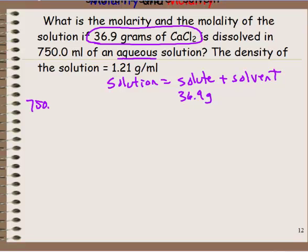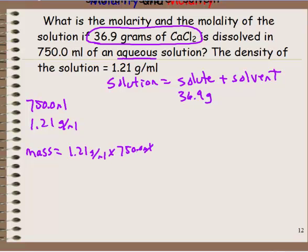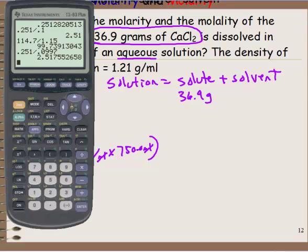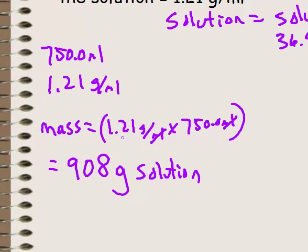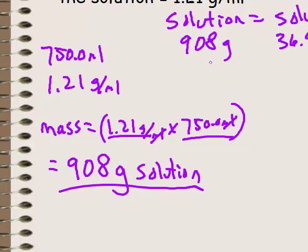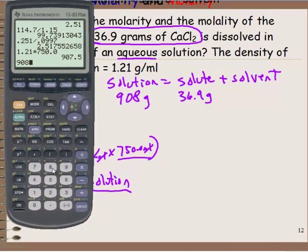With 750.0 milliliters of solution and a density of 1.21 grams per milliliter, the mass equals density times volume: 1.21 times 750.0 gives 907.5, so approximately 908 grams of solution. Since the solute is 36.9 grams and the solution is 908 grams, the solvent mass is 908 minus 36.9, which equals 871.1 grams.